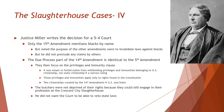What about the Privileges and Immunities Clause? That's not written in the 5th Amendment. It was meant to forbid states from withholding privileges and immunities belonging to U.S. state citizenship, making this more of a narrow ruling. Those privileges and immunities are only the rights found in the Constitution. Two citizenships were created by the 14th Amendment: state citizenship and federal citizenship. The butchers were not deprived of their rights because they could still engage in the profession — they just had to do it at the Crescent City Slaughterhouse.